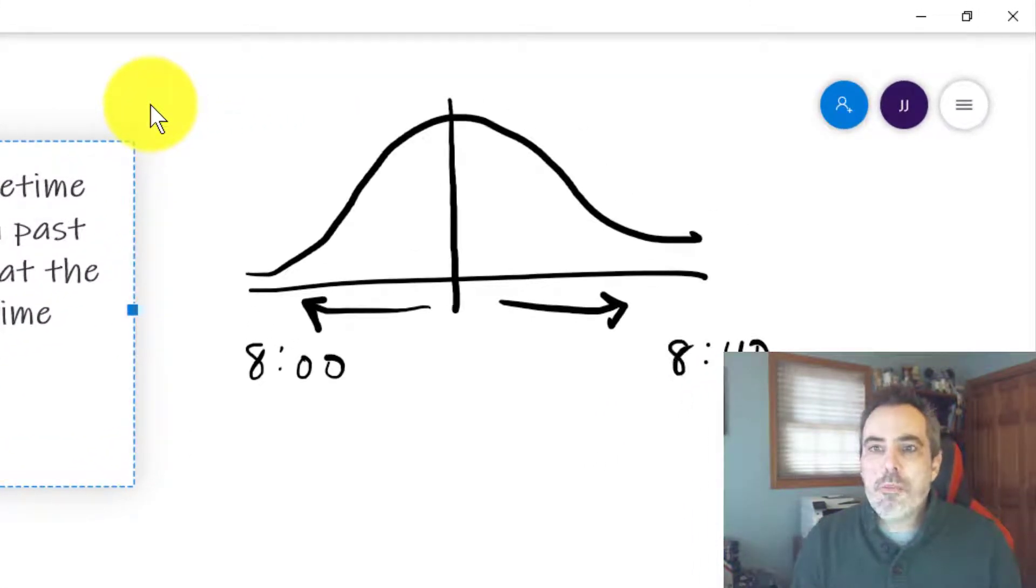If this were a normal distribution, we would say over here is 8 o'clock and over here is 8:40. In a normal distribution, we would expect to see a lot more people arriving right around 8:20. As an example, closer to 8:40, we get a few stragglers. Maybe work is supposed to start at 8:30.